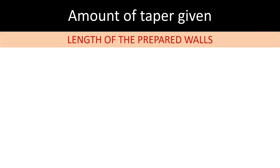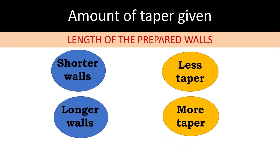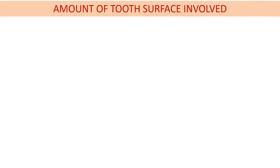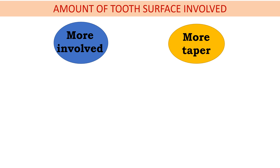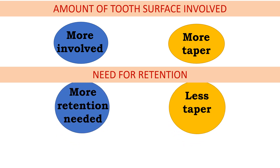Now what determines the amount of taper given? First is the length of the prepared walls — if the walls are short, we give less taper; if the walls are longer, we give more taper. Next is the amount of tooth surface involved — if the tooth surface is more involved, we give more taper. Then the need for retention — more retention needed means less taper. Lesser taper gives more retention, and near-parallel walls would give maximum retention, meaning with zero degree taper the retention would be maximum.